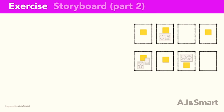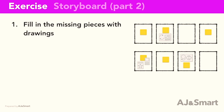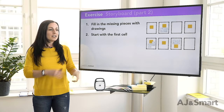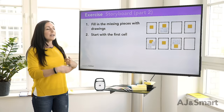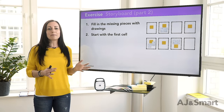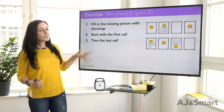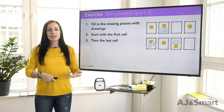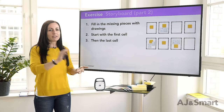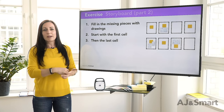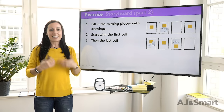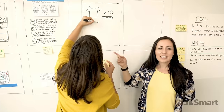Now you can go into part two of the storyboard, filling in the missing pieces by drawing around them or building on existing drawings as a base. It's a great idea to start with the first cell — often something simple like a Google search, an email, or a Facebook ad. Then go to the very last cell and draw what's there, which might also be quite simple — a final purchase click, confirmation, or sharing with a friend. Doing those first two helps the team feel a sense of progress, and then it's a lot easier to see what happens in between.